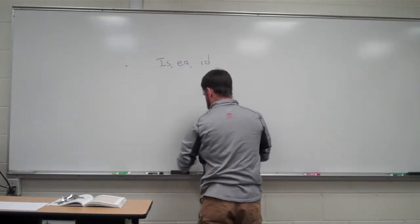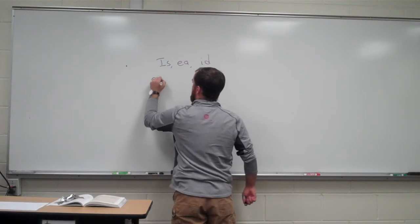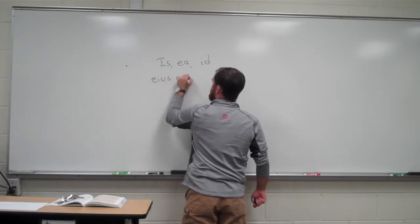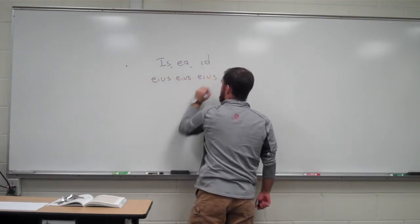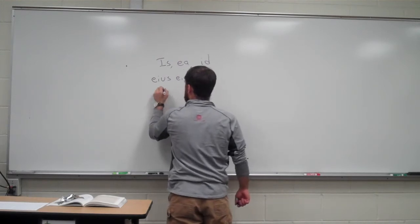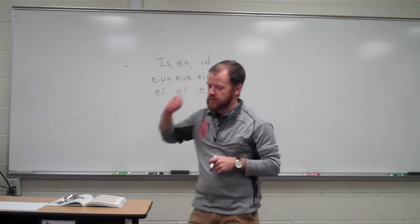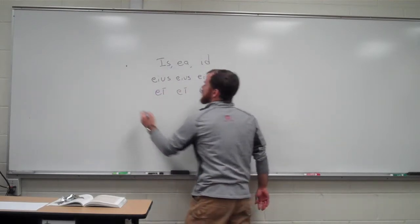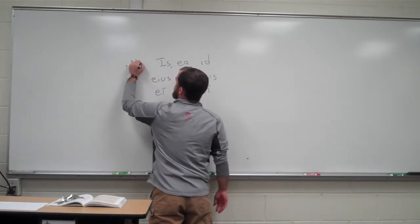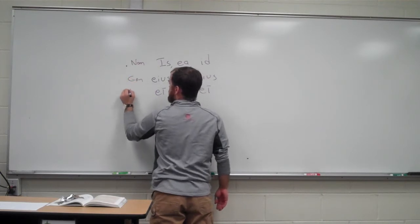So we have is, ea, id. And then we have eius, eius, eius. Then ei, ei, ei. This is one of those macrons that you are going to want to memorize. So that's nominative, genitive, and dative.